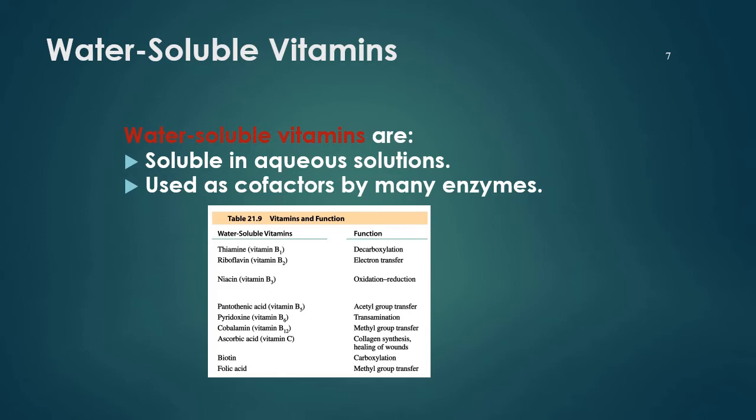Ascorbic acid is very important in collagen synthesis and healing of wounds. That is why nowadays people are very interested in vitamin C, because it can help the synthesis of collagen in our body. However, please bear in mind not to consume it in overdose, because overdose of vitamin C can also cause a burden to our liver.